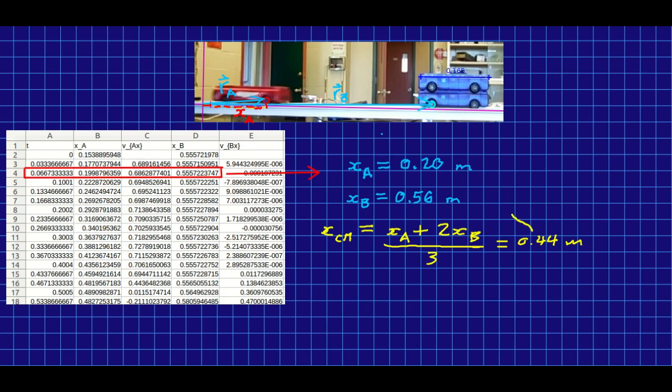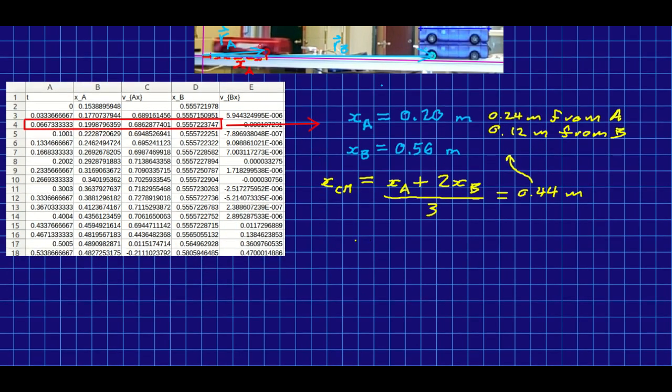And if you plug that into your calculator, you'll find that it's 0.44 meters. And for once, I kind of care about this number, because there's something interesting about it. Look, it's 0.24 meters from cart A, and it's 0.12 meters from B. So it's twice as far from A, and A has half the inertia. That's interesting. So that's a clue as to what's going on here.